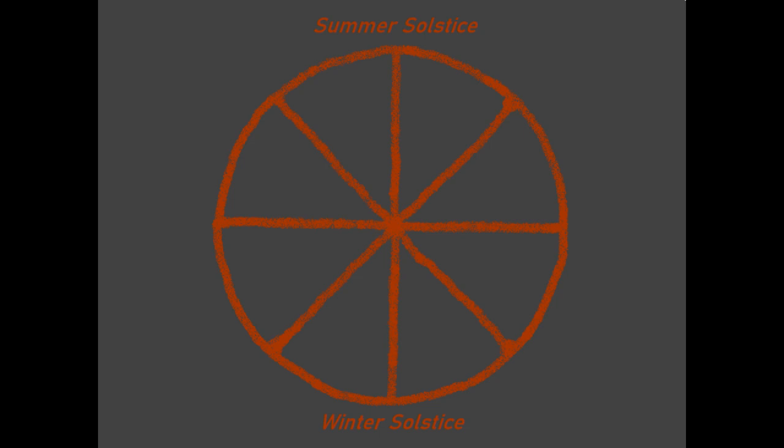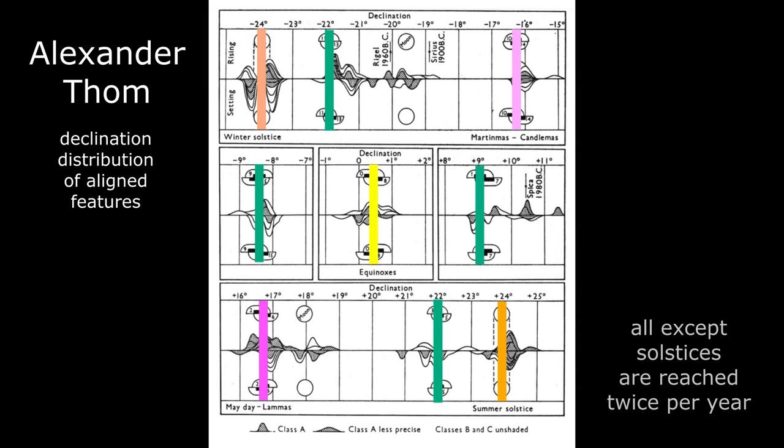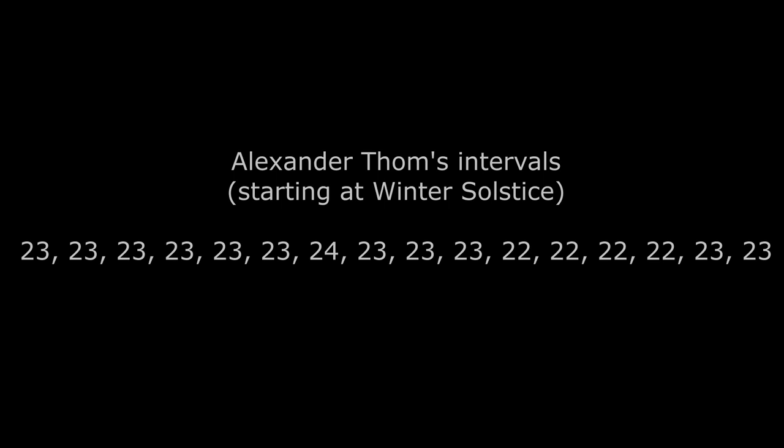If the days in a year are divided and subdivided, 16 parts can be obtained, and Alexander Thom found some evidence for these divisions based on a statistical distribution of site orientations in Britain. These 16 intervals would be about 23 days each, but some would need to have 22 days so as not to exceed the 365 or 366 days in a year.